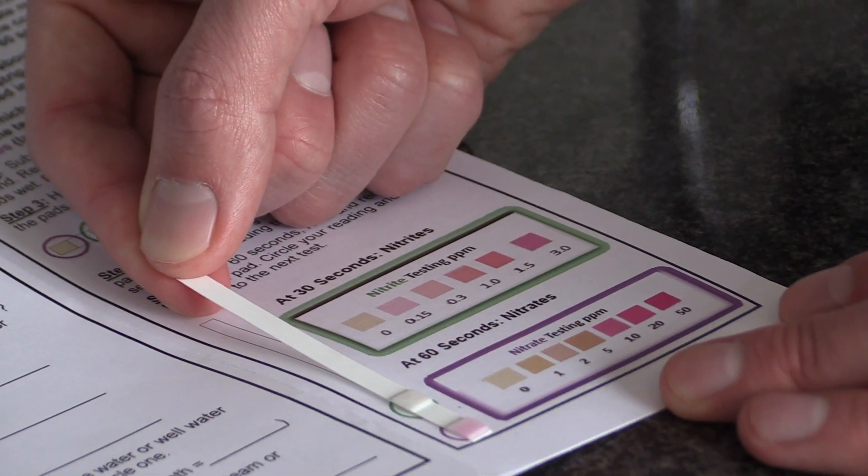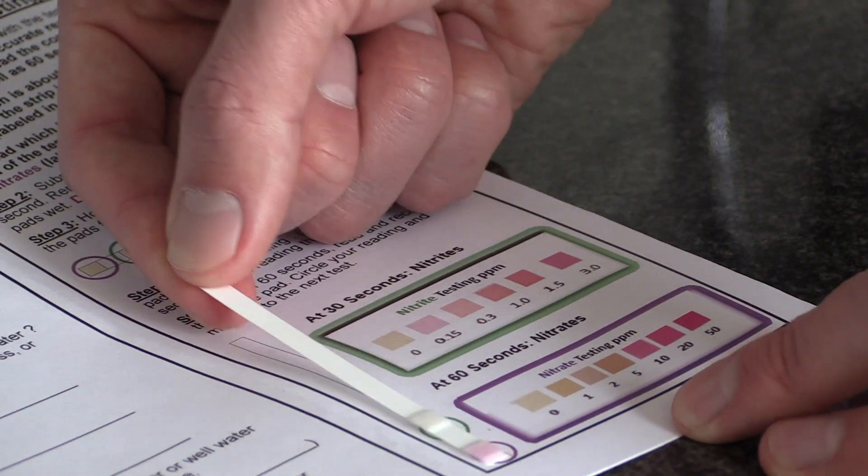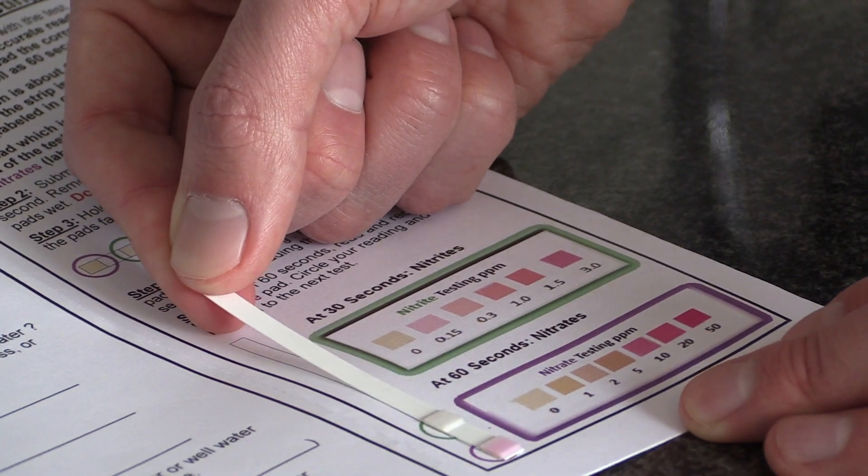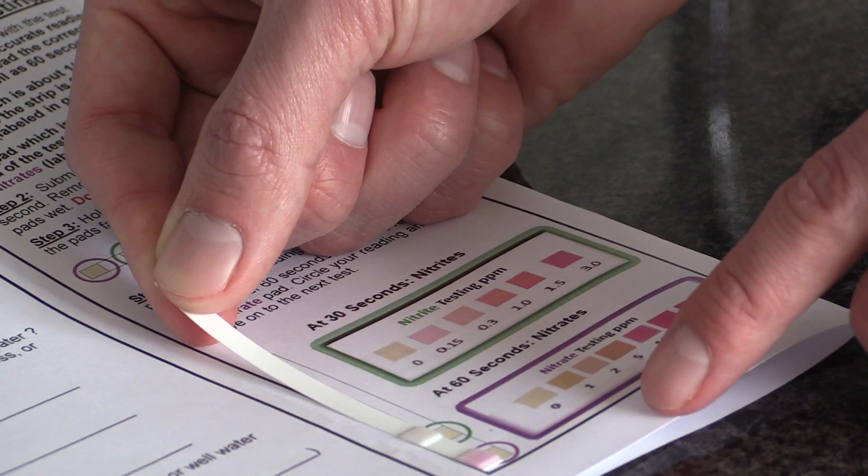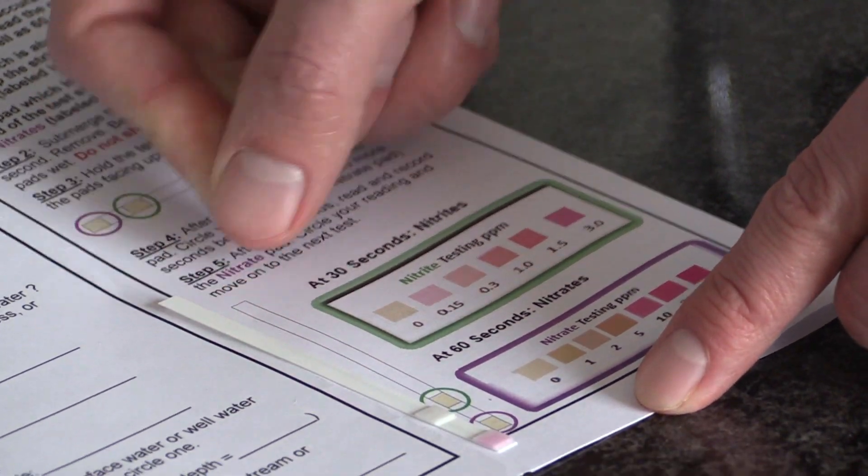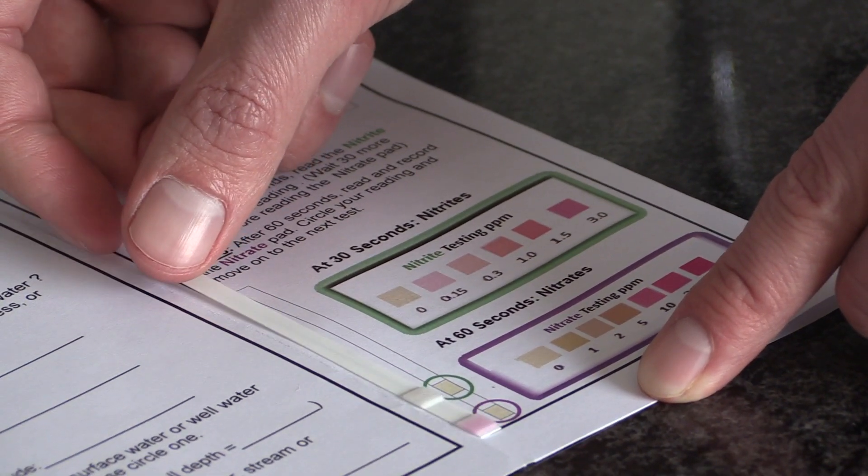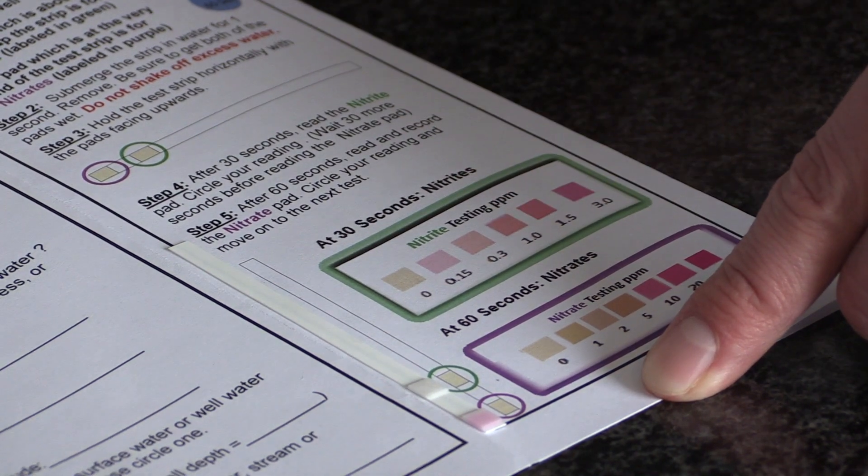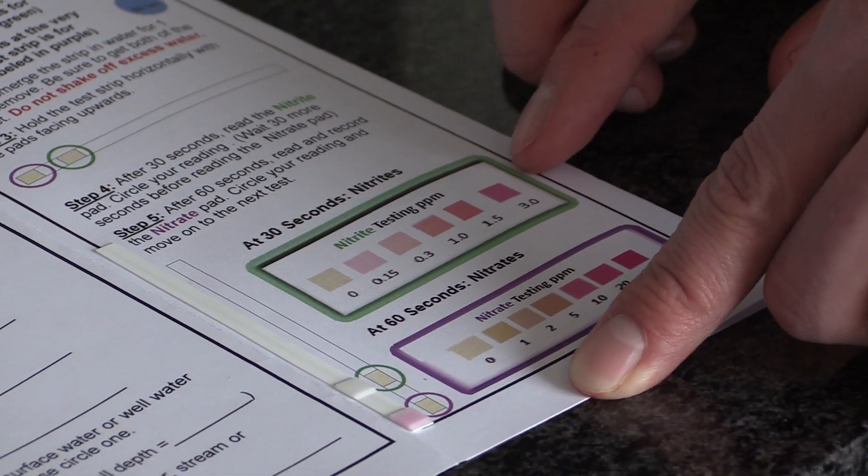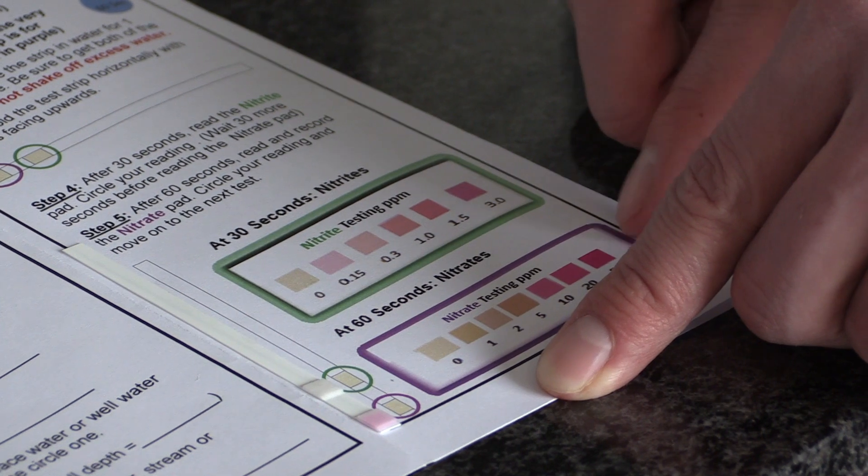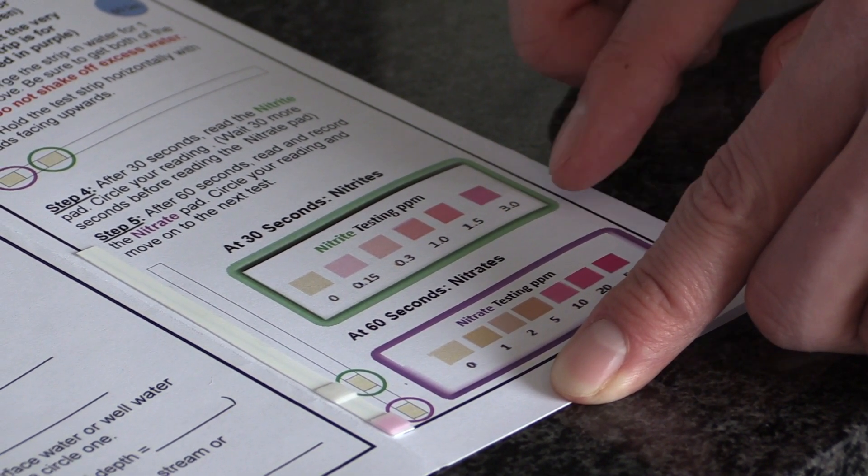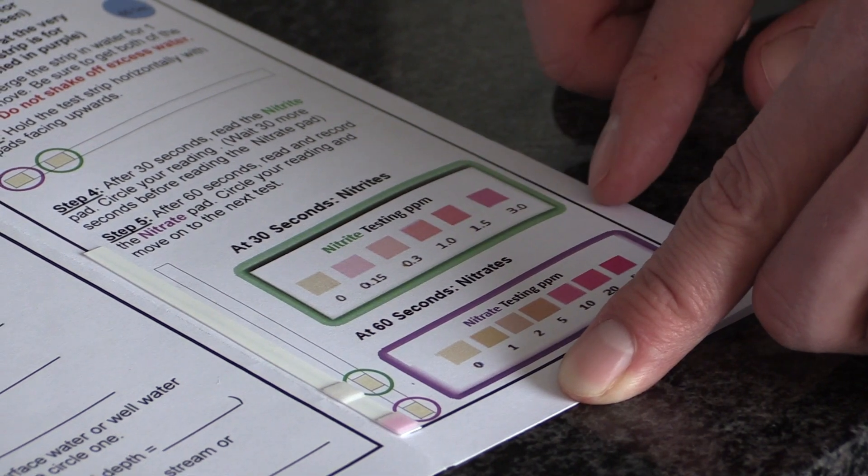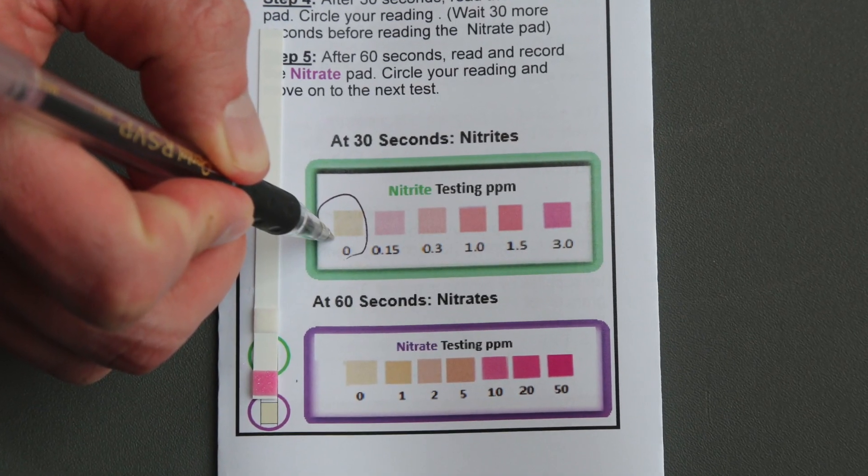At the end of your one-minute incubation period, take your test strip and match it up to the corresponding boxes provided. The indicator will be shown in the pamphlet for which way to hold the strip up to these boxes, with the green circle indicating the green color pad for nitrites and the purple circle indicating the purple panel for nitrates. Identify which color your pad best matches and then circle that color.